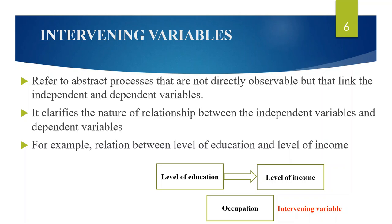For example, there is an observed positive correlation between the level of education and level of income, such that people with higher levels of education tend to earn higher levels of income. This observable trend, however, is not directly causal. Occupation serves as the intervening variable between the two, since educational level (the independent variable) influences what kind of occupation one will have (the dependent variable), and therefore how much money one will earn. In other words, more schooling tends to mean a higher status job, which in turn tends to bring a higher income.